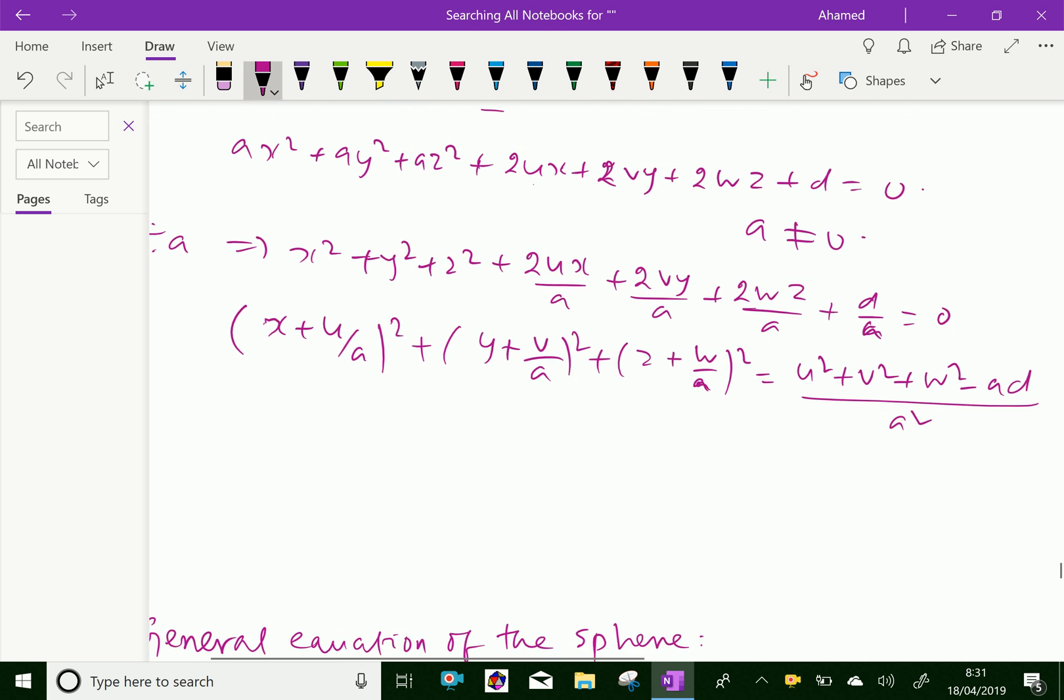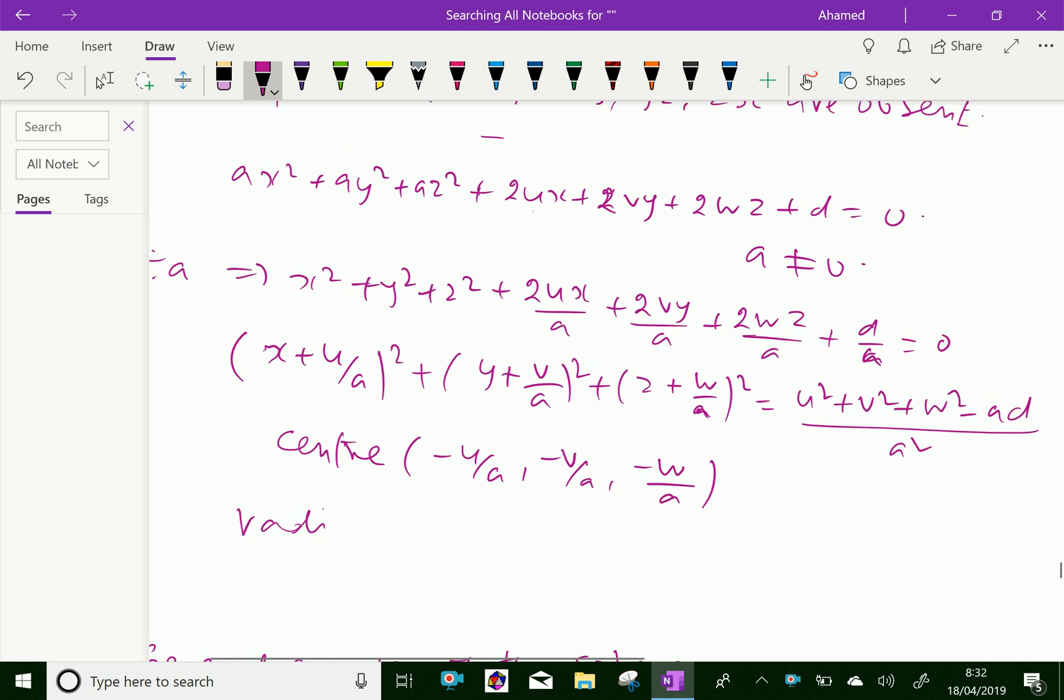From this equation, you can write the center is minus u over a, minus v over a, minus w over a, and radius can be written as square root of u square plus v square plus w square minus a d over a.